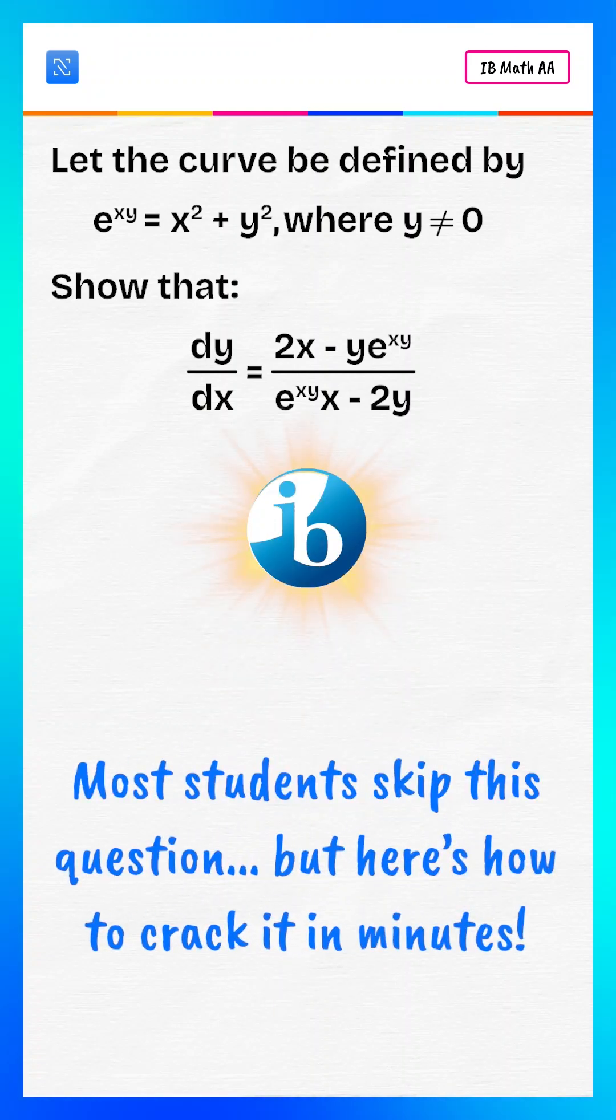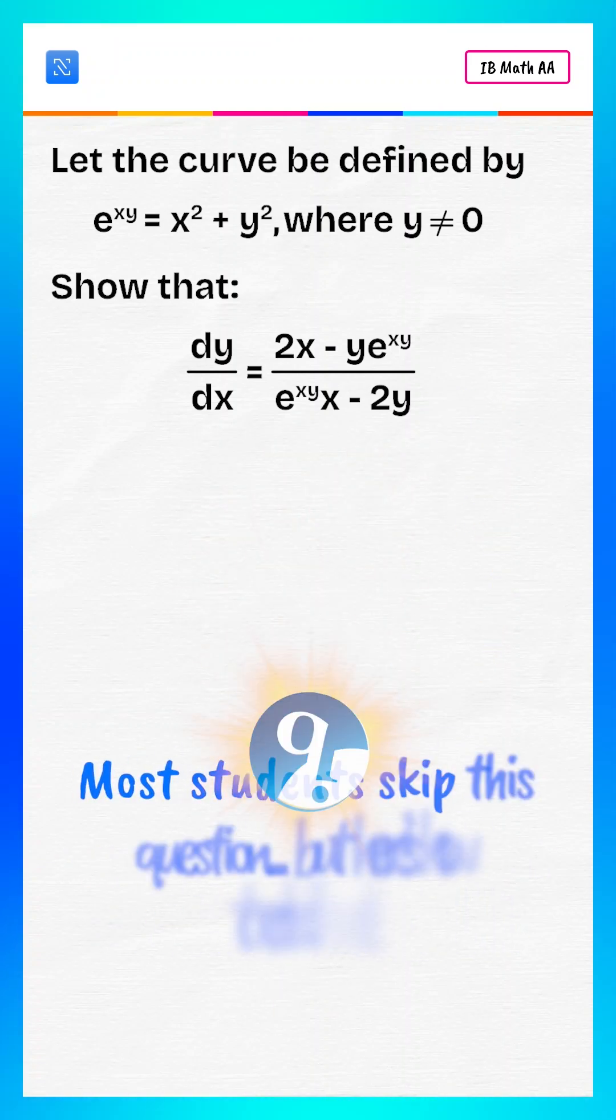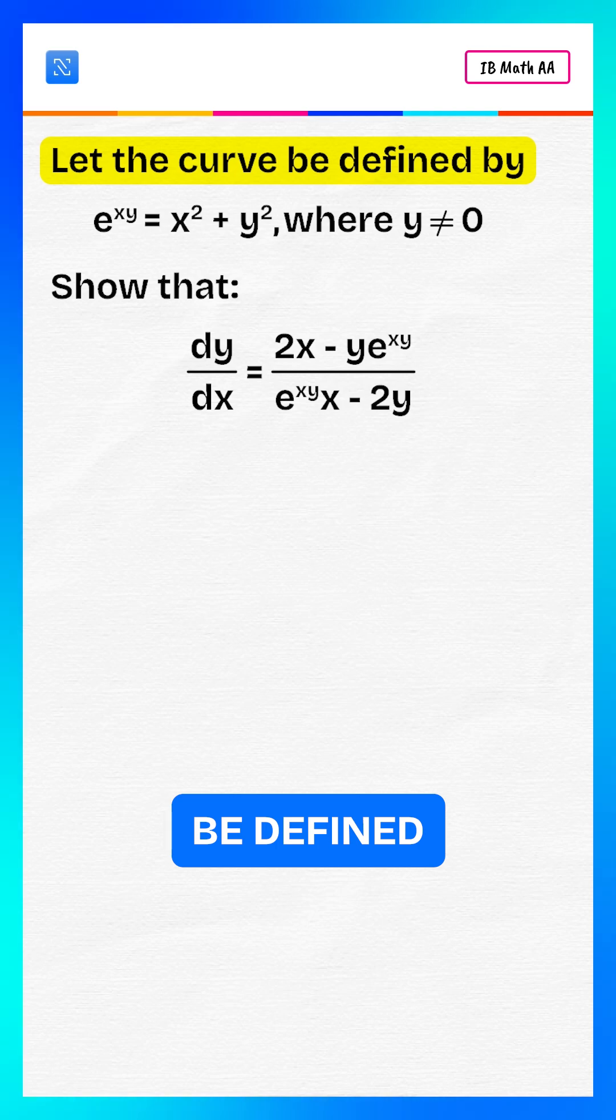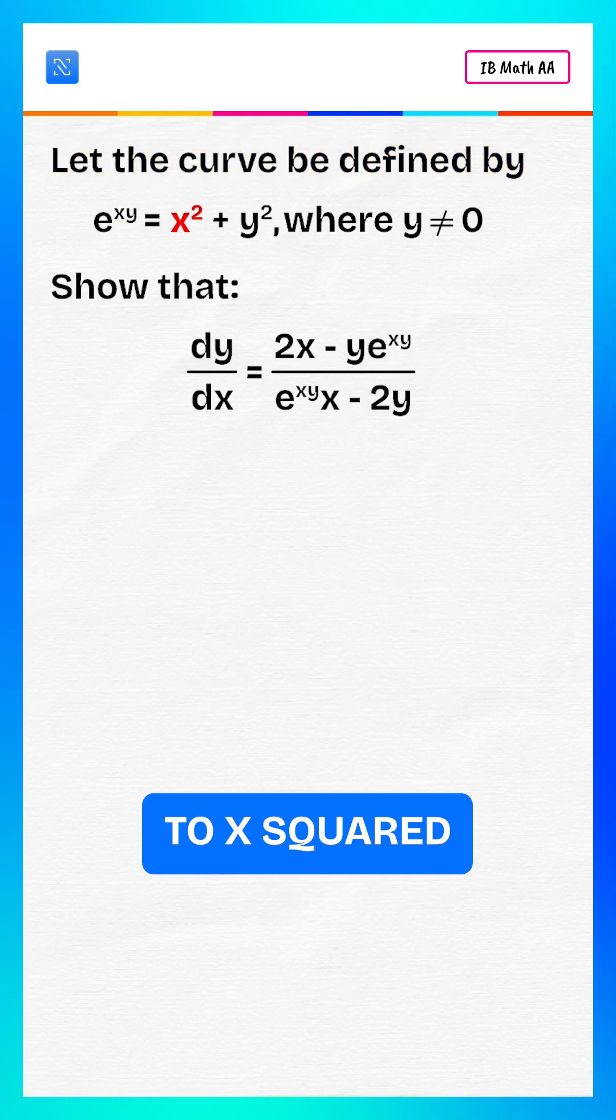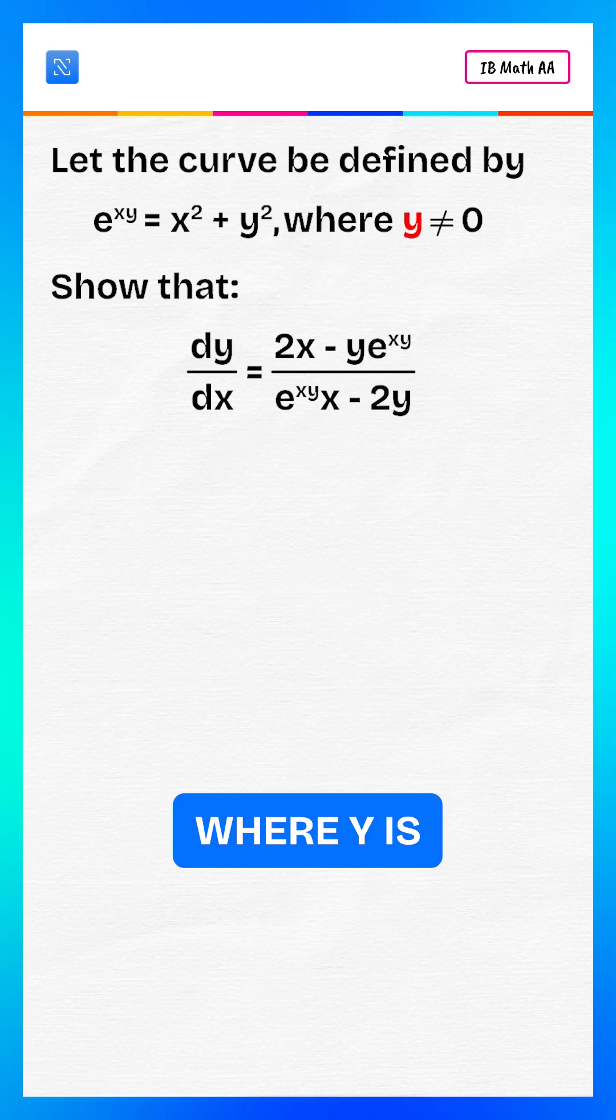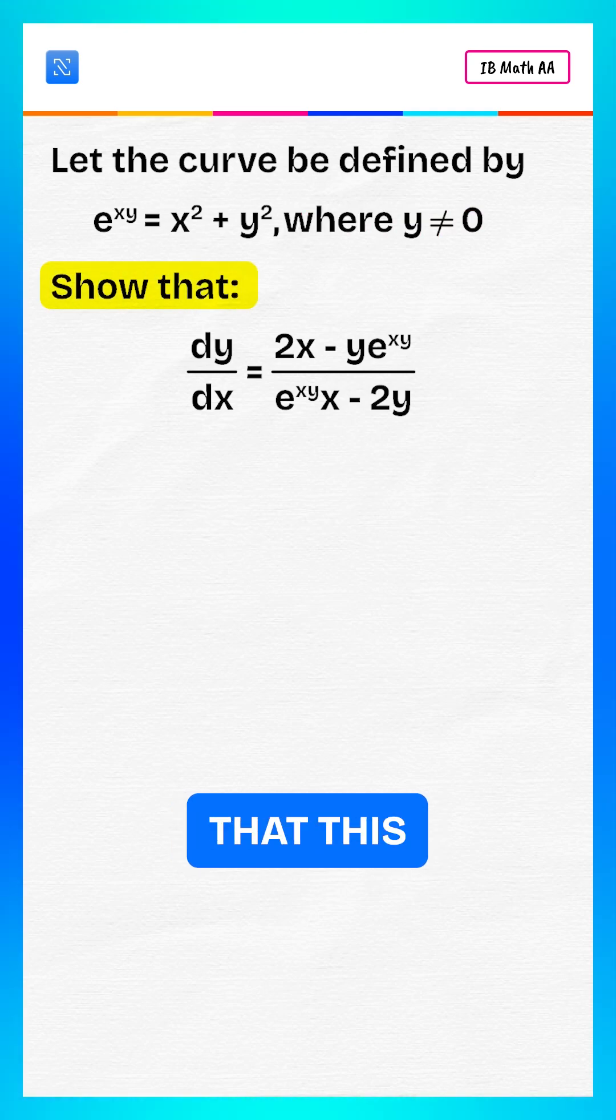Most students skip this type of question, but here's how to crack it in minutes. Let the curve be defined by e to the power xy equals to x squared plus y squared, where y is not equal to zero. Show that this.